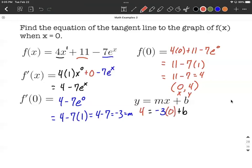This won't be difficult to solve for b because we have 4 = -3(0) + b, which gives us 4 = 0 + b, so b = 4.